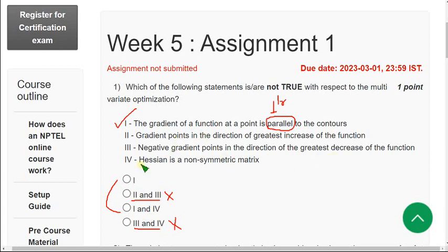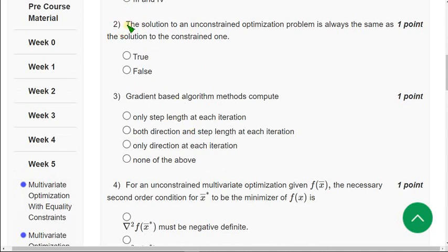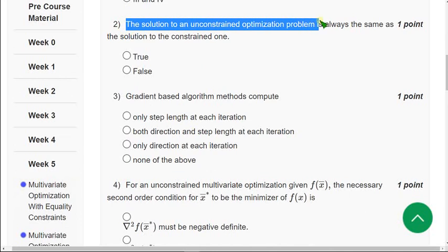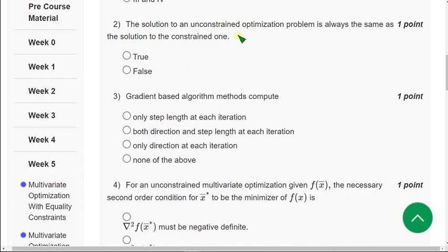In the fourth option, Hessian is not a symmetric matrix. But Hessian is a symmetric matrix. So it is also a false statement. So the probable answers are option 3, 1 and 4. I think the given statement is false. You can suggest your answers if you think that any question has to be changed.